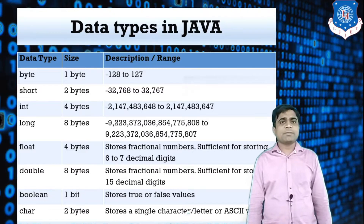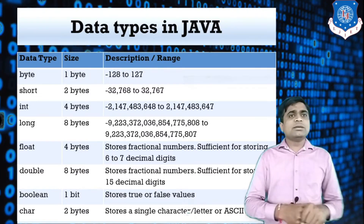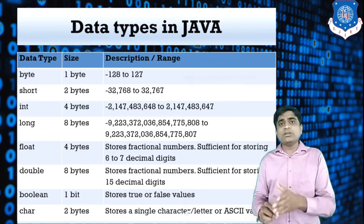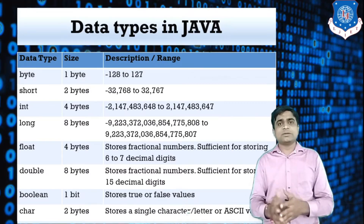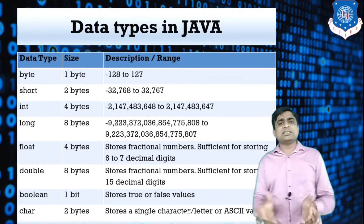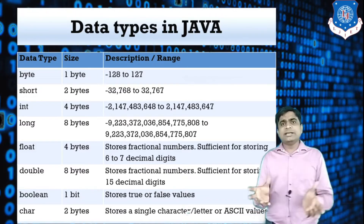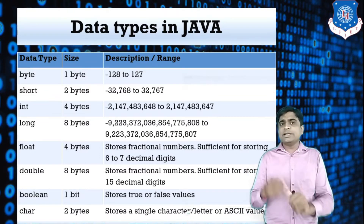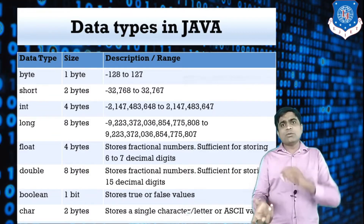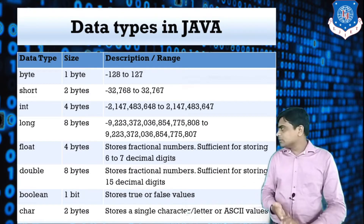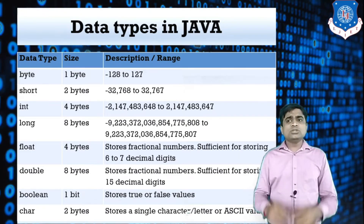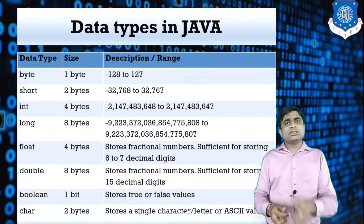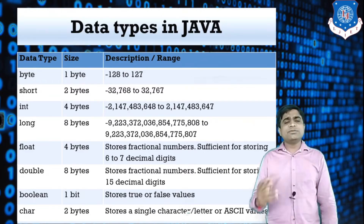The next data type is boolean. This is used when you have only two values: true and false. Whenever you use relational operators and want return values in the form of true or false, you can use a boolean data type. It stores only true or false — either zero or one. The last data type is character, used for character values, with a size of 2 bytes.